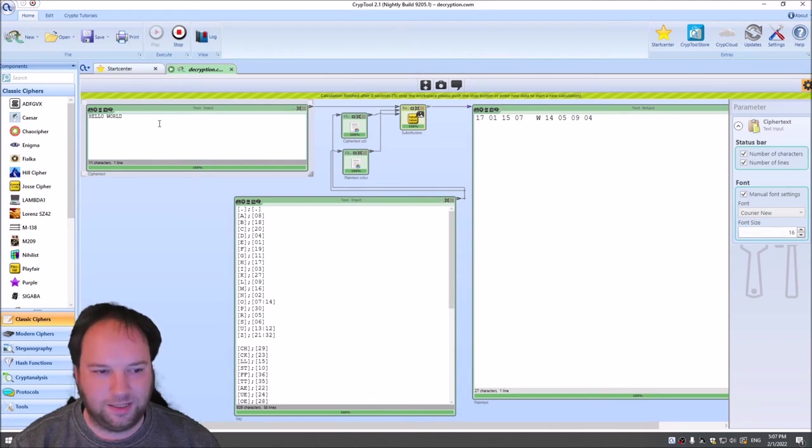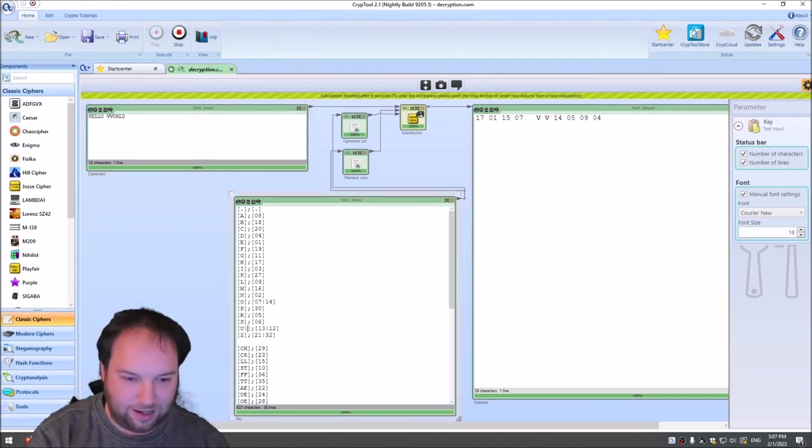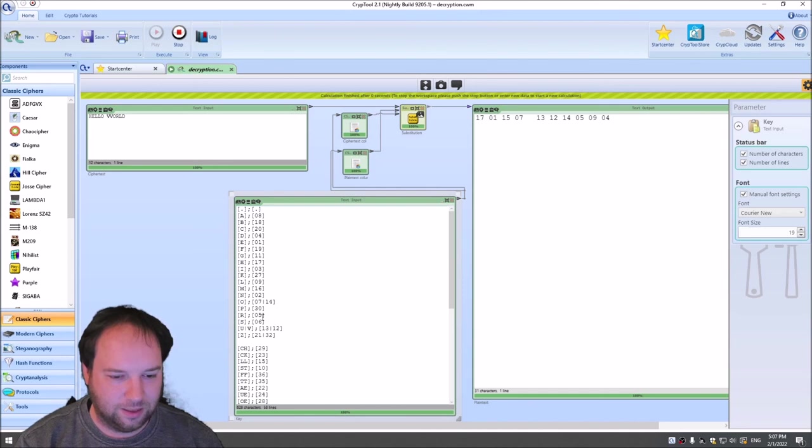And as you can see here, now we have H 17, E is 01, L, L. It can actually encrypt LL because we have LL in our cipher here, 15. Then we have the O is a seven. And as you can see, we don't have a W here. But we could just replace it by two Vs. And we also don't have two Vs. But actually, the two Vs are also the U here. So U is a V.